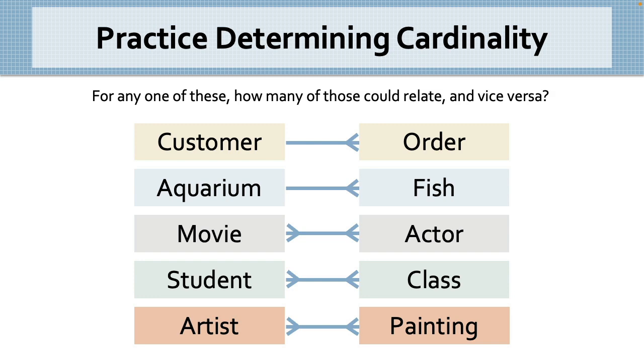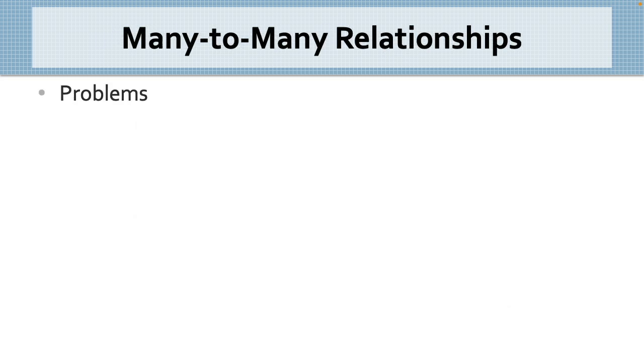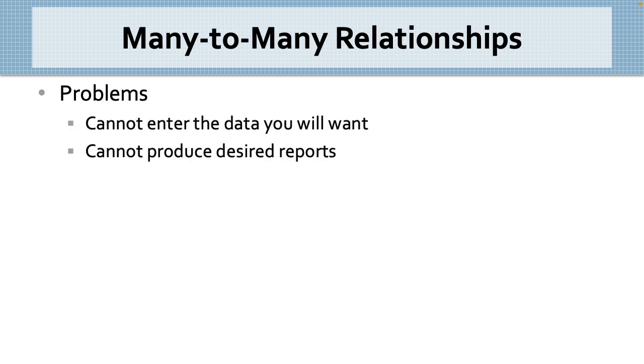We see that many-to-many relationships are common in the real world. Now, let's discuss the problems with many-to-many relationships. Two problems caused by many-to-many relationships are that you cannot enter the data you will want, and you cannot produce the kinds of reports you will likely want to generate.